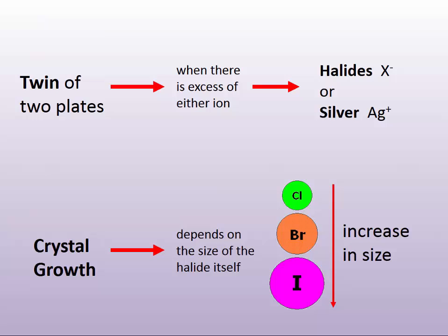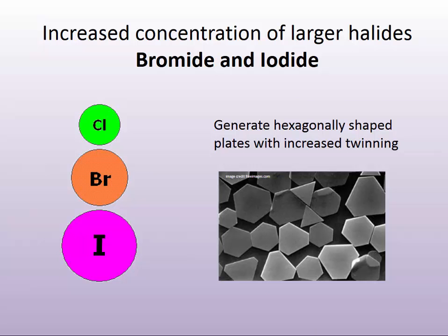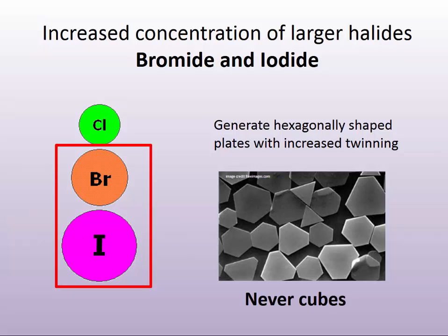We also know that the crystal growth depends upon the size of the halide itself. Once we start getting a large concentration of either the larger radii halides — either bromide or iodide — we don't see cubes. You will not see cubes in those emulsions. They tend to be more hexagonally shaped plates.